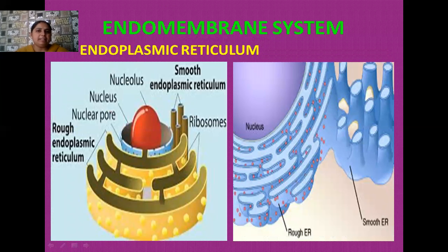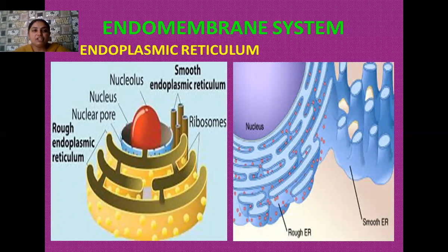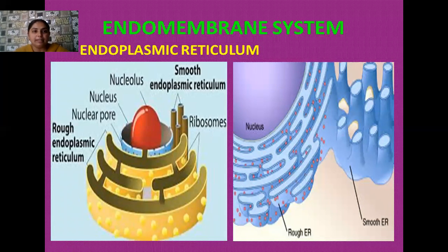The next topic is the endomembrane system. Endomembrane structures is the term used for organelles whose membranes are in continuity with the membrane of the nucleus or the nuclear membrane. Those organelles come under the endomembrane structure whose membranes have direct continuity with the outermost membrane of the nucleus. There are four organelles under the endomembrane system: rough endoplasmic reticulum, smooth endoplasmic reticulum, Golgi apparatus, lysosomes, and vacuoles.